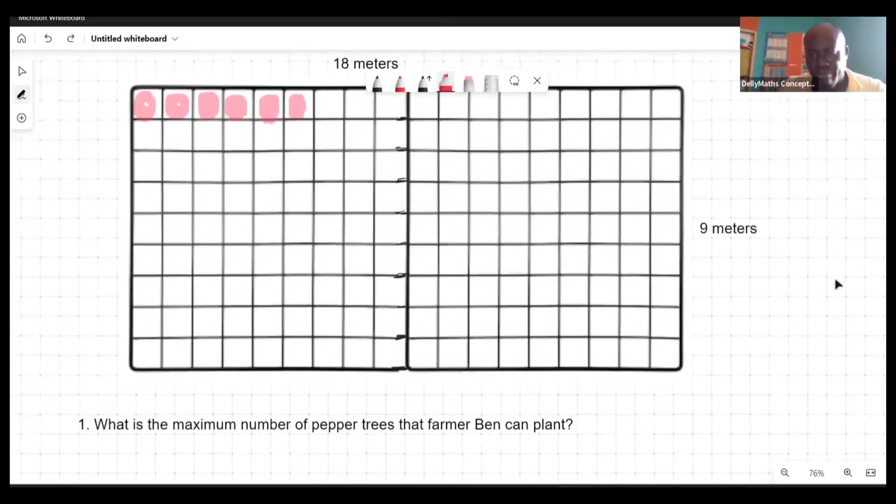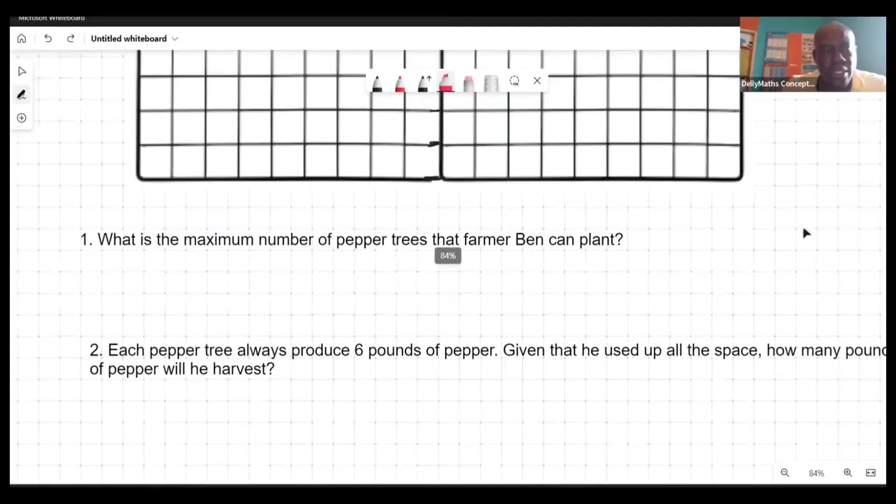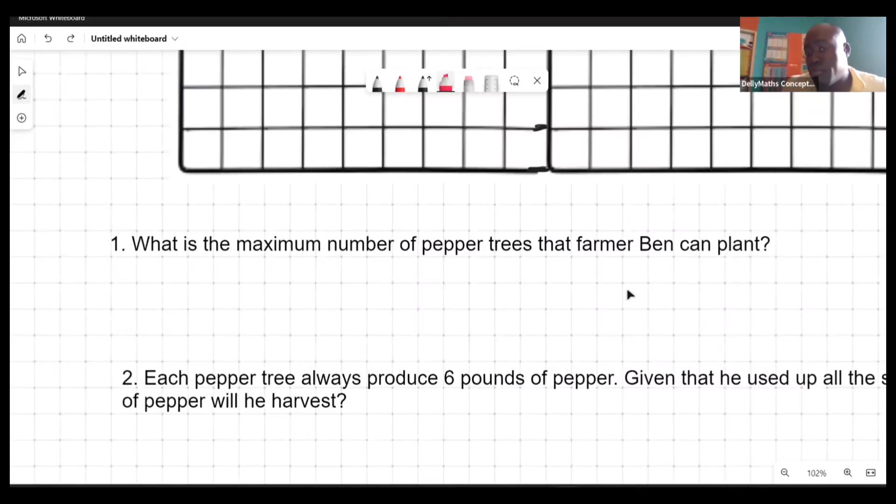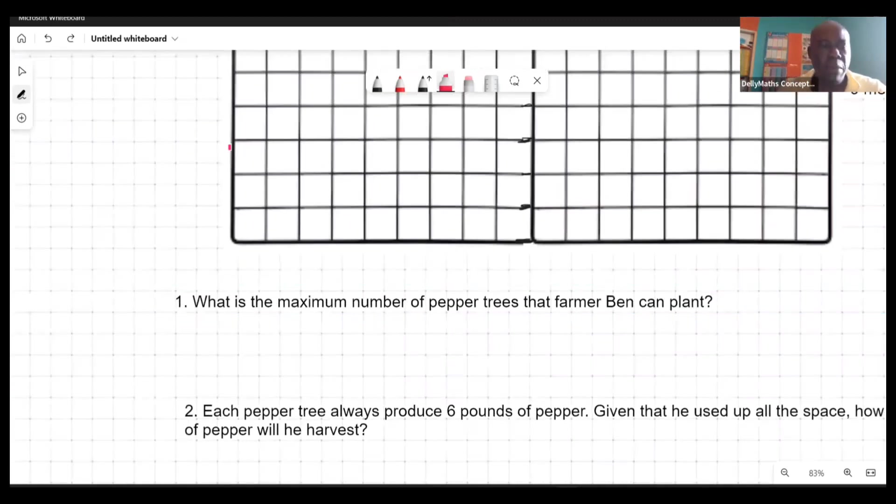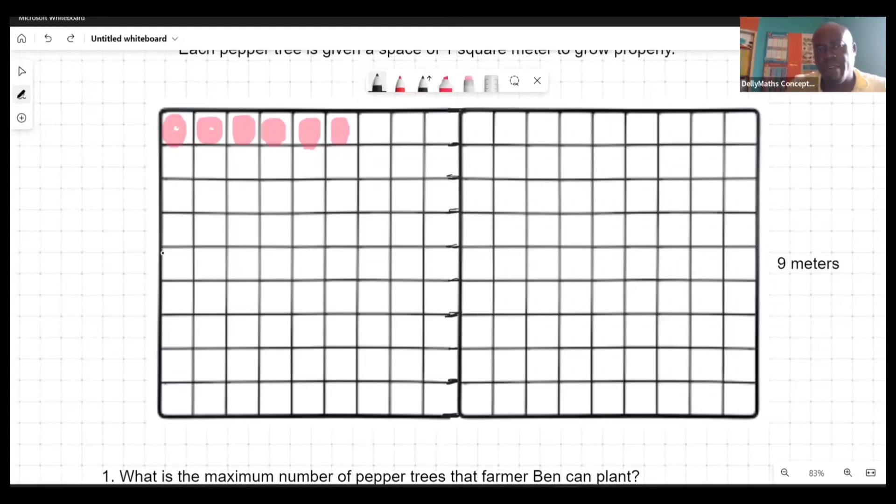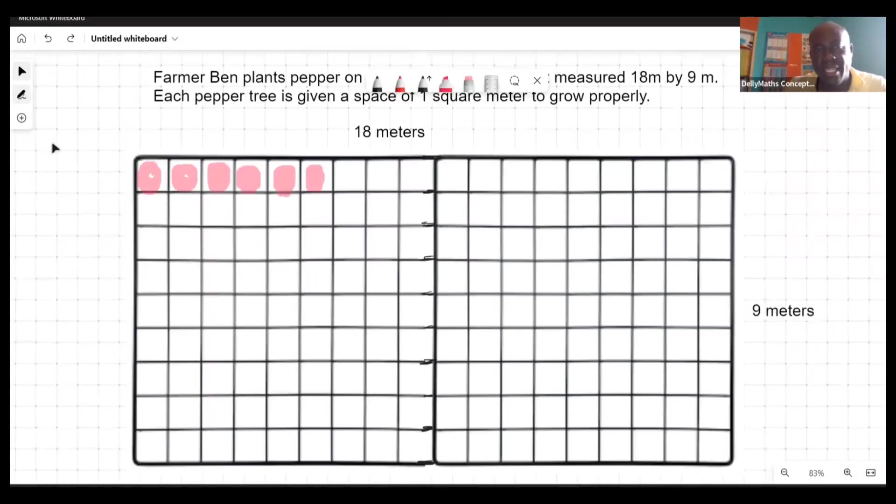The first question says what is the maximum number of pepper trees that Farmer Ben can plant. The maximum number of peppers that can be planted depends on the dimensions that you have. Based on the dimension we have, 18 by 9, we're able to tell the total area of this plot of land in square meters. Basically all we have to do is find the total area of this plot of land.